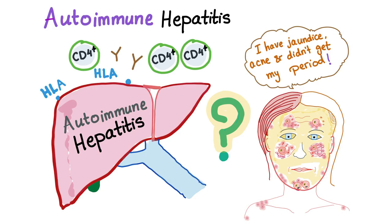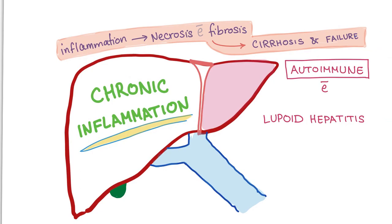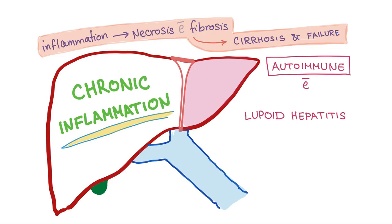Autoimmune hepatitis: 'itis' means inflammation, 'hepato' means liver, and 'autoimmune' means the pathogenesis has an immunological origin. It is characterized by liver inflammation with immunological origin, presenting with jaundice, acne, and amenorrhea, more common in females. It leads to chronic inflammation of the liver causing necrosis with fibrosis, possibly cirrhosis or even liver failure.